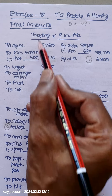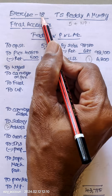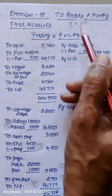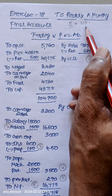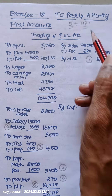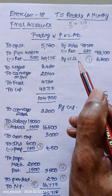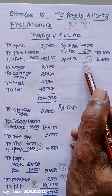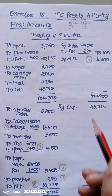Final accounts chapter, Exercise 18. There are five adjustments total, plus transfer of net profit. The first adjustment is closing stock — record it in the trading account and show it in the balance sheet.